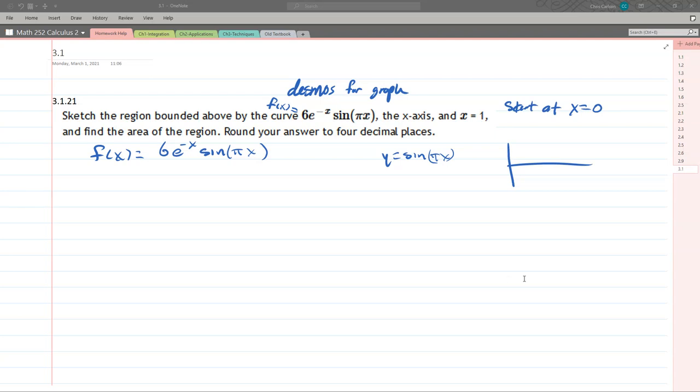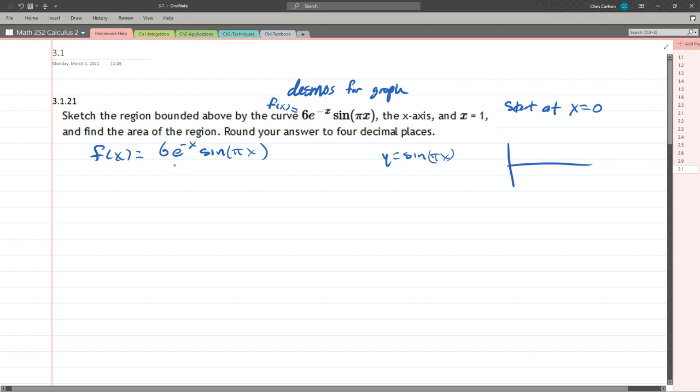We're going to graph problem 3.1.21, and this is a curve. This curve is a little bit funky. Multiply by 6 is really not so funky, but it's this exponential multiply by sine function. So I'm going to run over to Desmos to graph this.